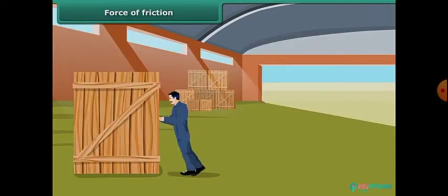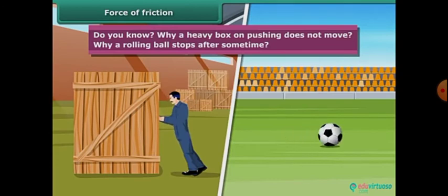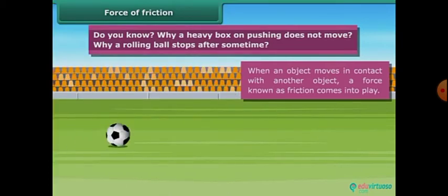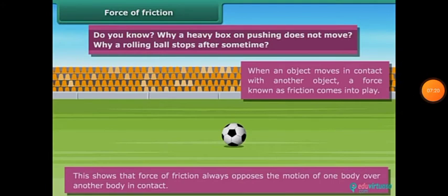Next is the force of friction. Do you know why a heavy box does not move when pushed? Why does a rolling ball stop after some time? When an object moves in contact with another object, a force known as friction comes into play. The force of friction always opposes the motion of one body over another body in contact.